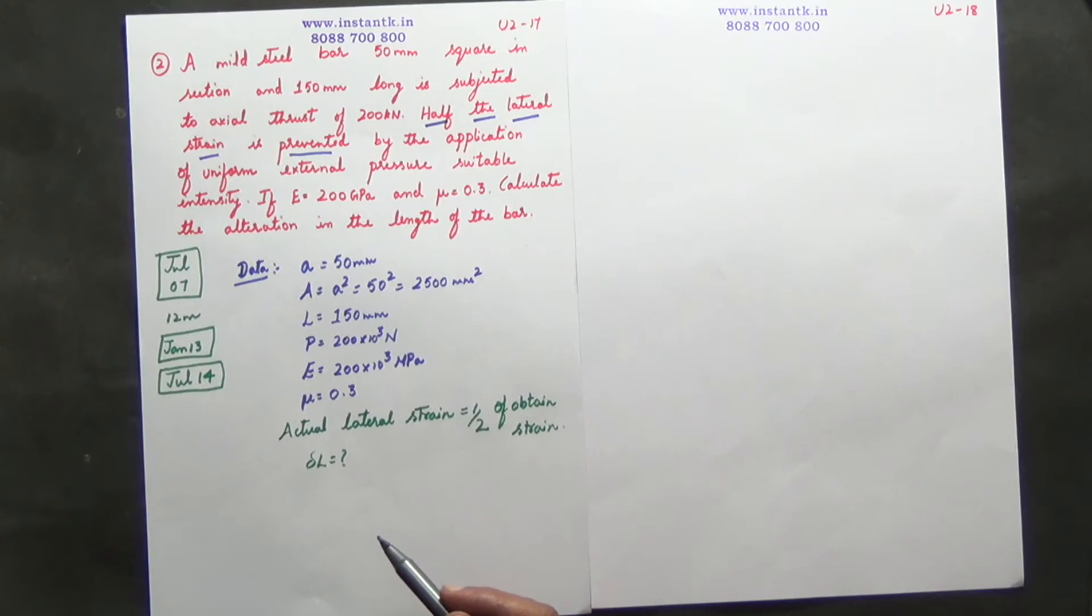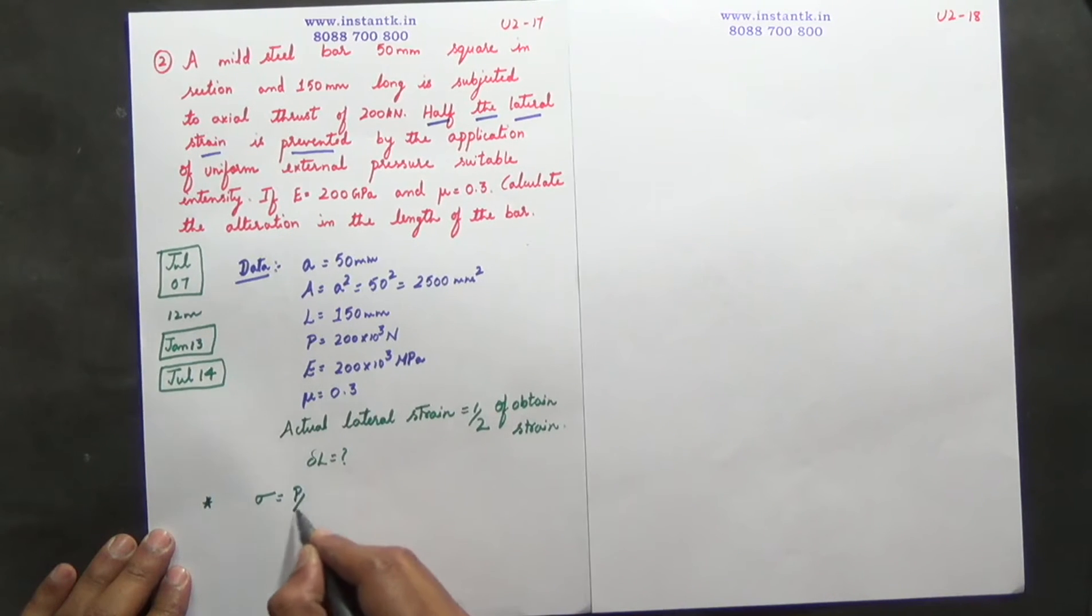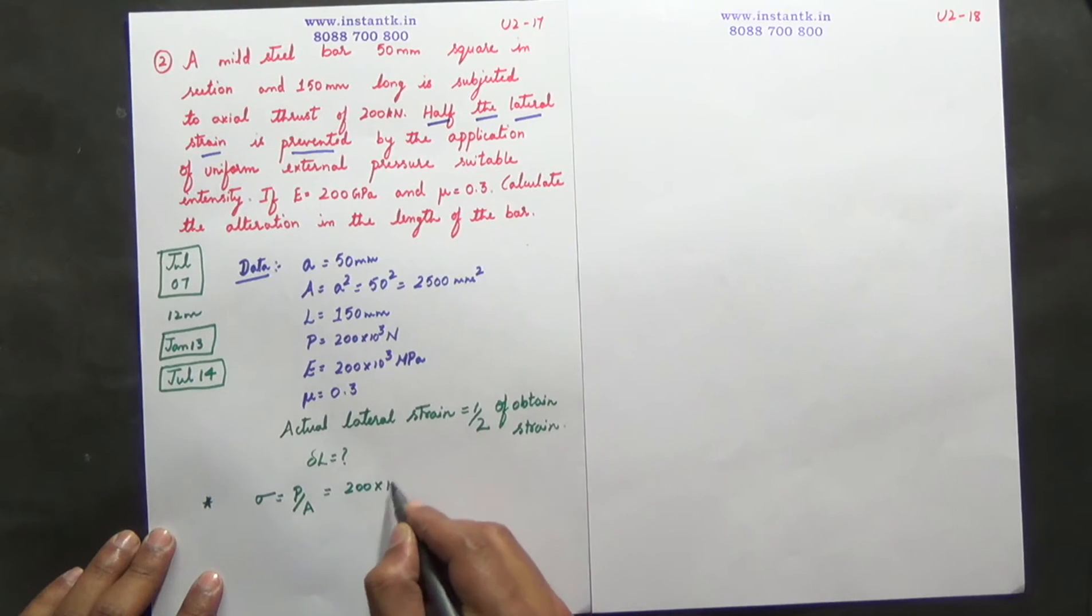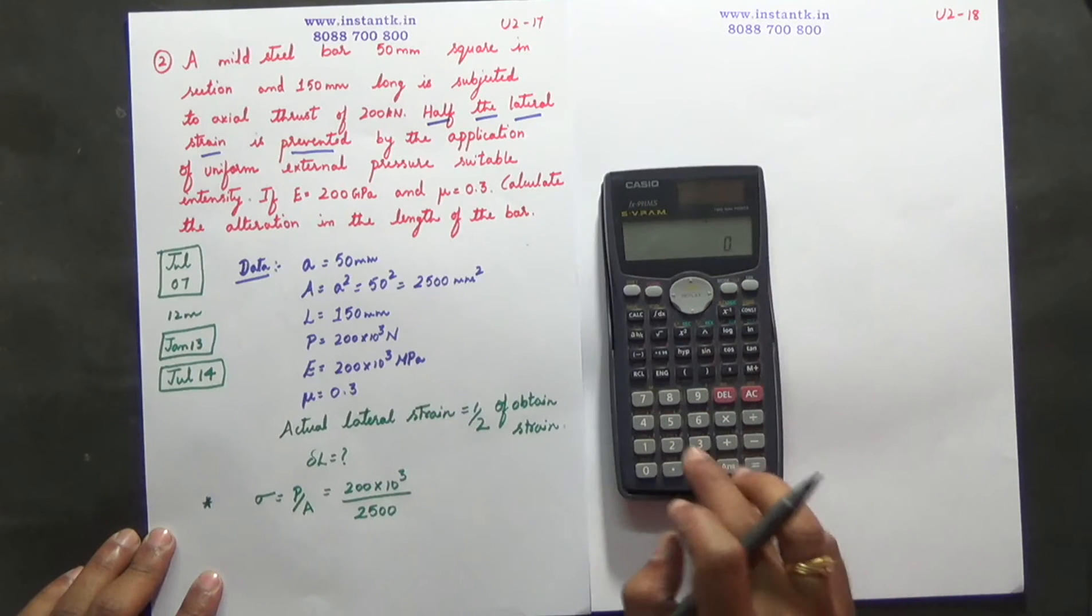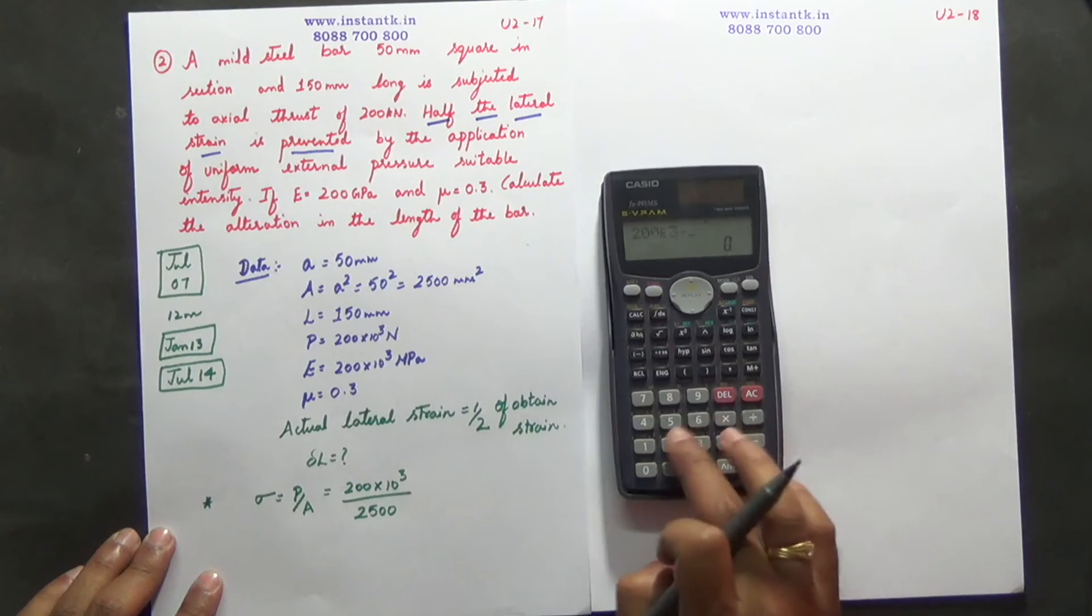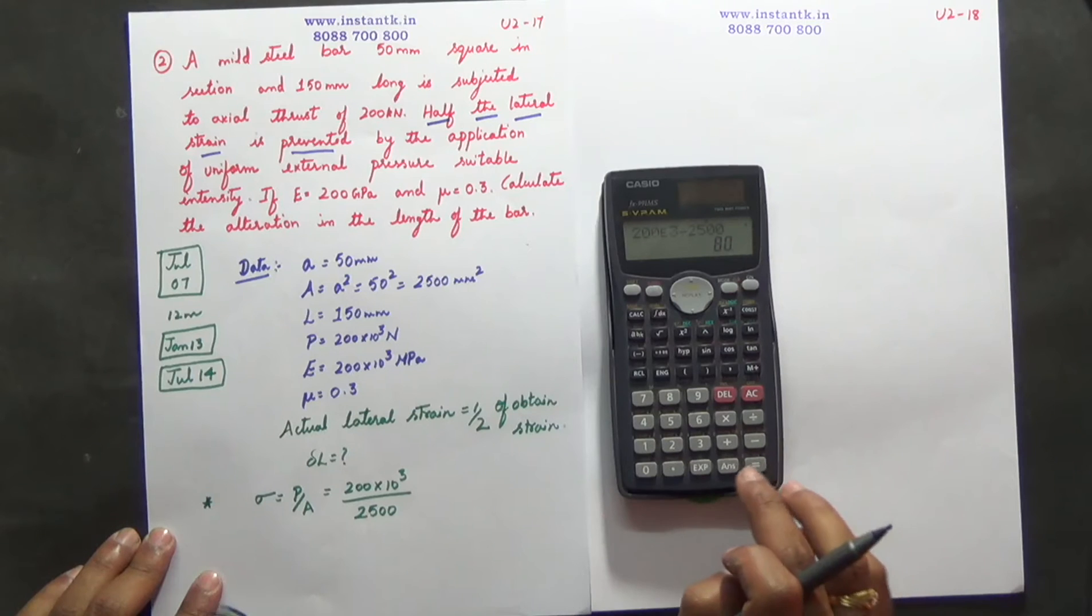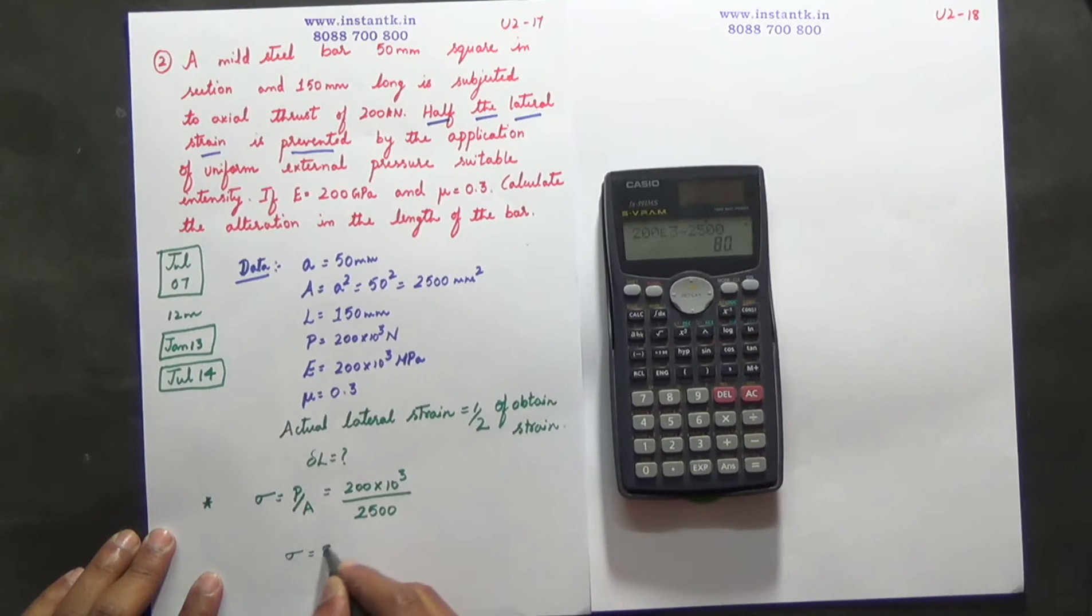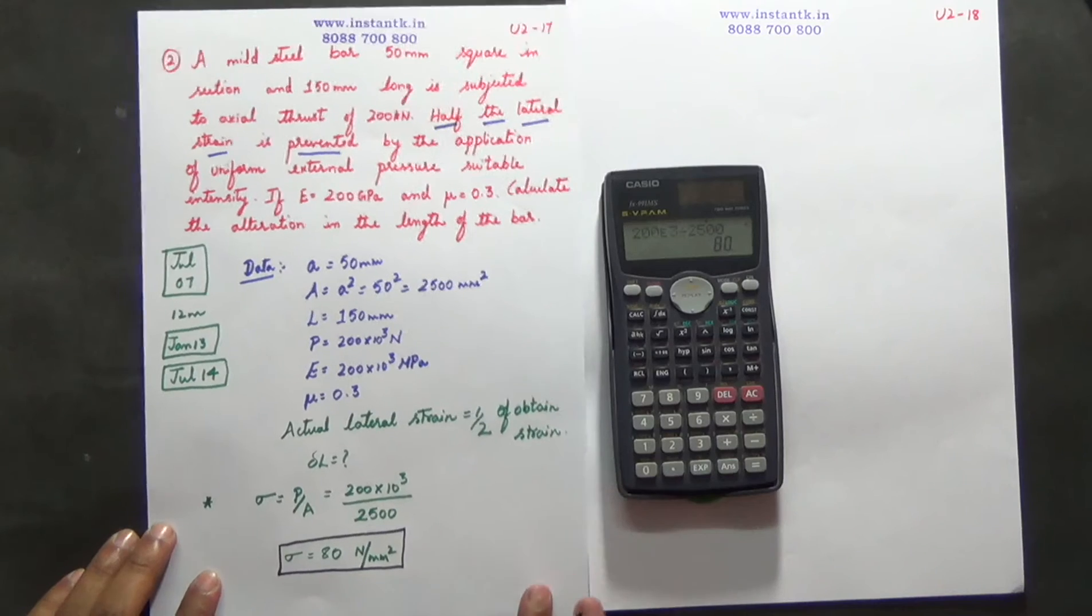So first step is sigma is equal to P divided by A, which is nothing but 200 into 10 power of 3 divided by 2500. Observe carefully, 200 E 3 divided by 2500 is 80. So sigma is equal to 80 Newton per mm squared.